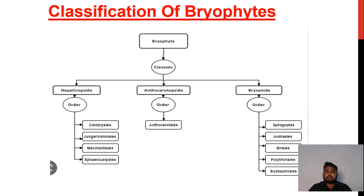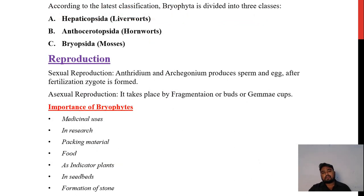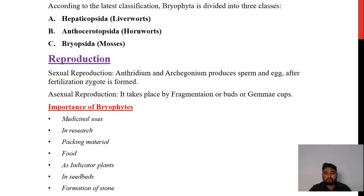The classification of Bryophytes: Bryophyta is divided into three classes. Hepaticopsida, which are the liverworts; Anthocerotopsida, which are the hornworts; and Bryopsida, which are the mosses. This is the classification of Bryophyta according to the latest classification.